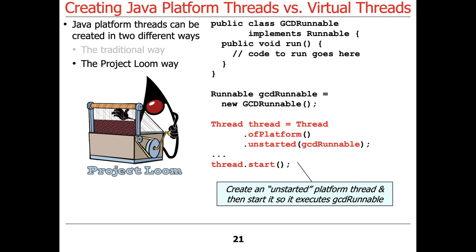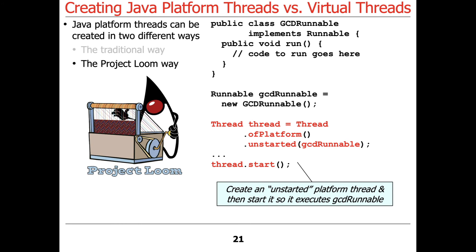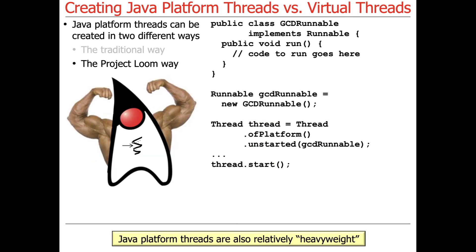You can also create an unstarted thread: Thread.ofPlatform().unstarted(runnable), get yourself a thread, and then explicitly start it later. That's another way you can do things. However, Java platform threads are still relatively heavyweight — just having more APIs to call doesn't make them any less onerous in terms of the resources they use.